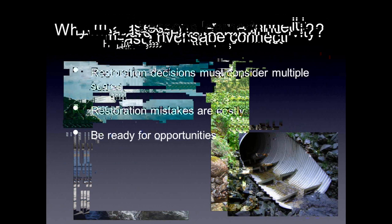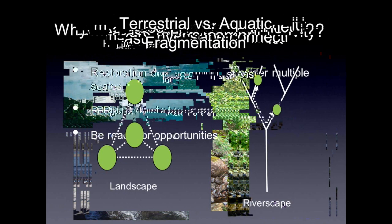And I said, yes, landscape ecologists are pretty good at that. He asked whether I knew how to do it in a watershed or riverscape setting, and I had to give it some thought. In terrestrial landscape ecology, we think about fragmentation — or the converse, connectivity — quite a lot. And it's different, as I began to think about it, from a riverscape.